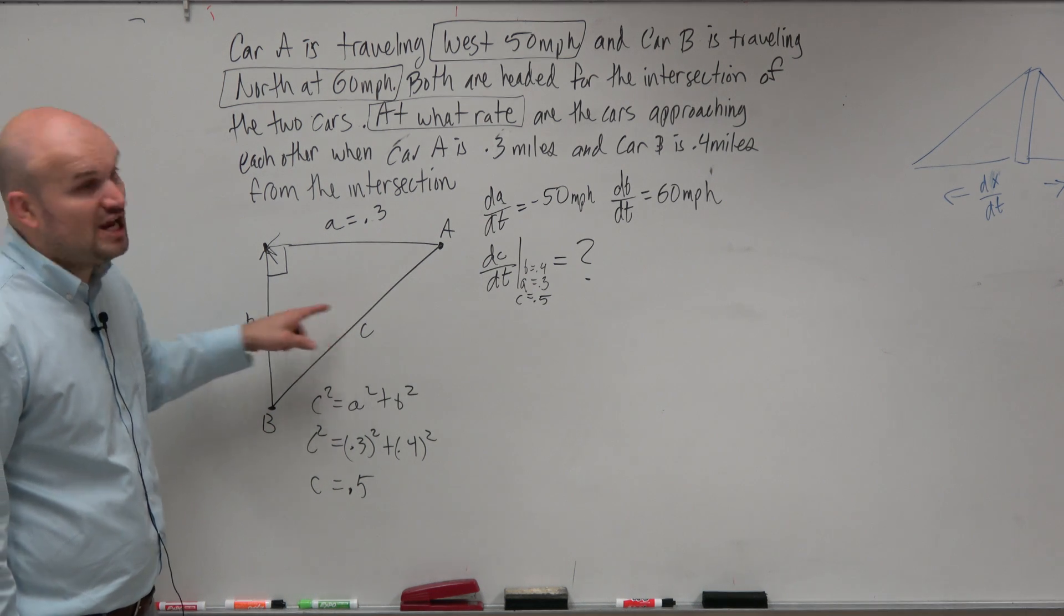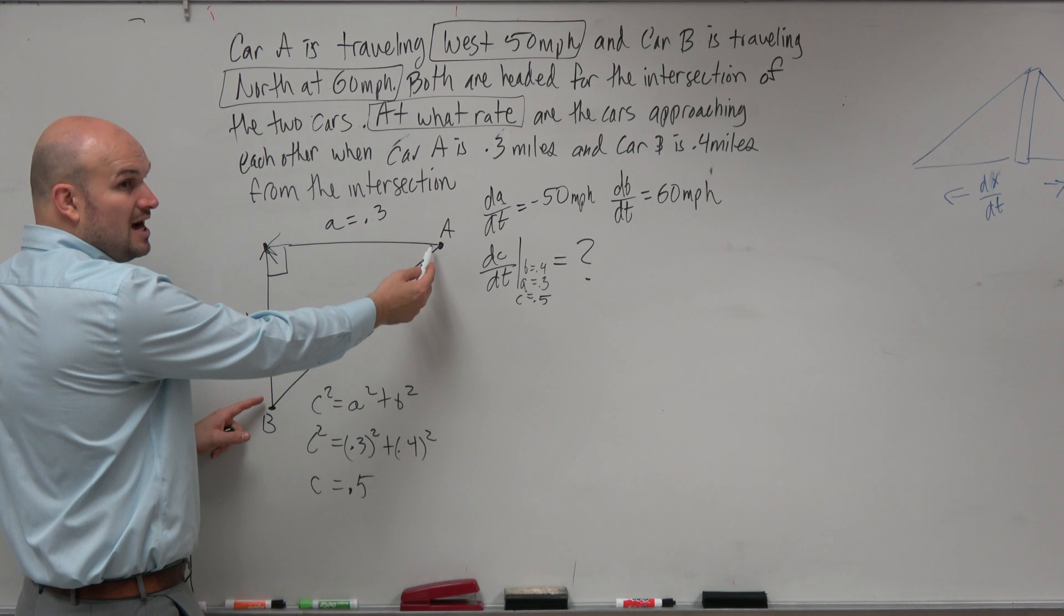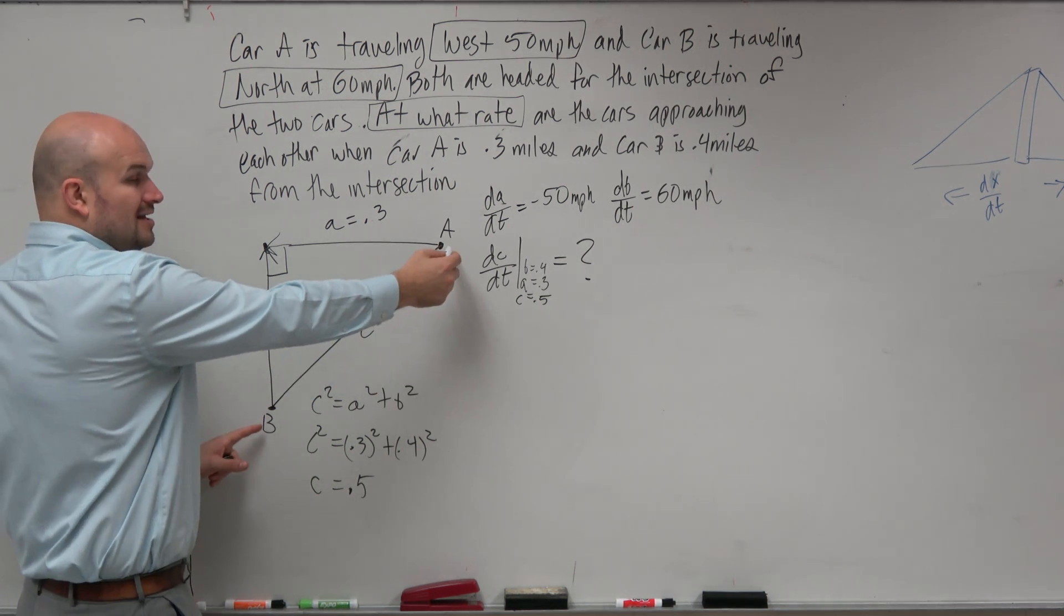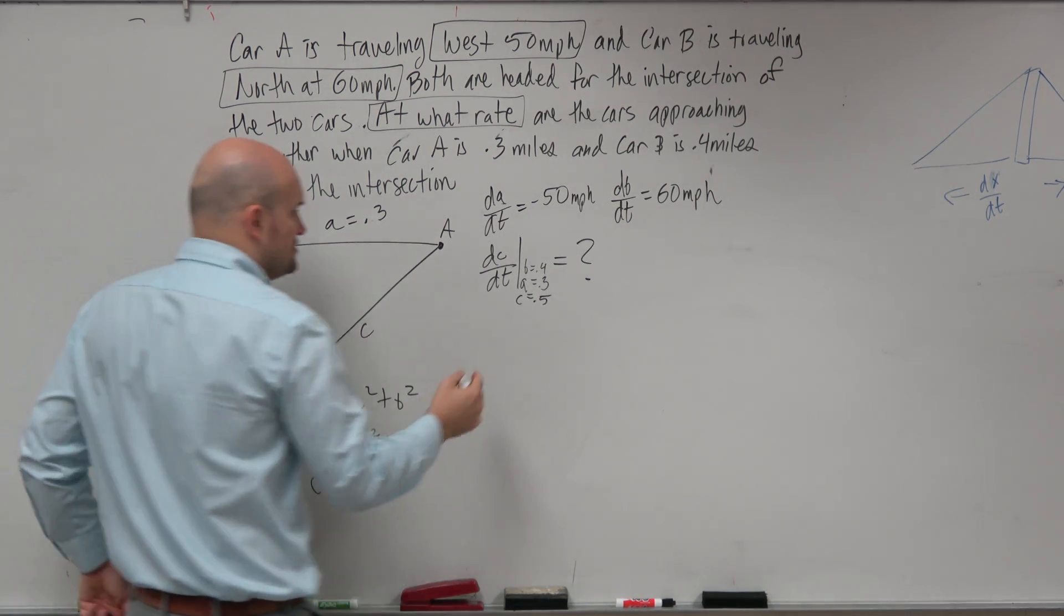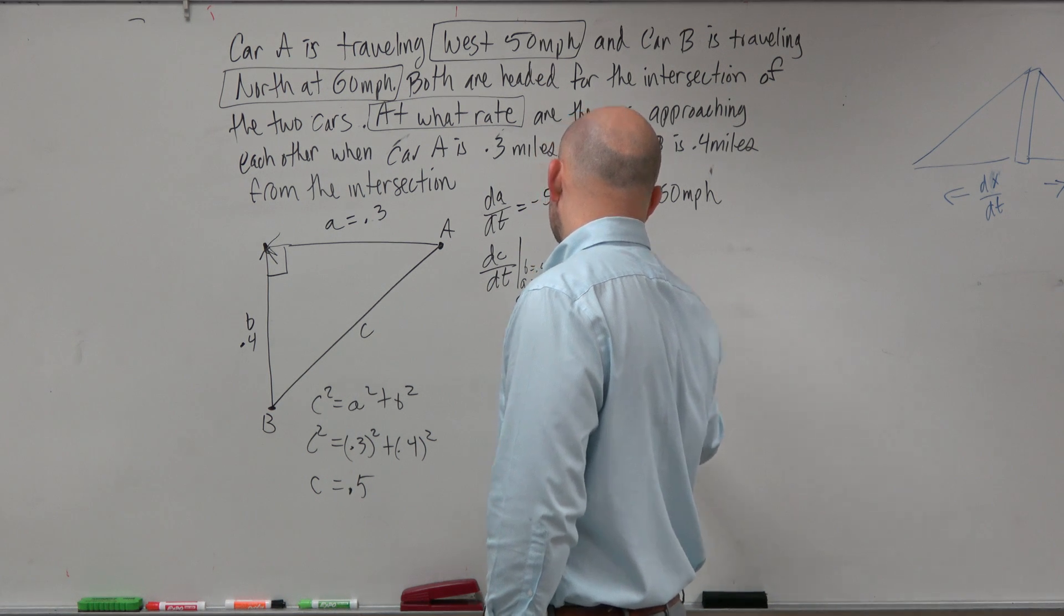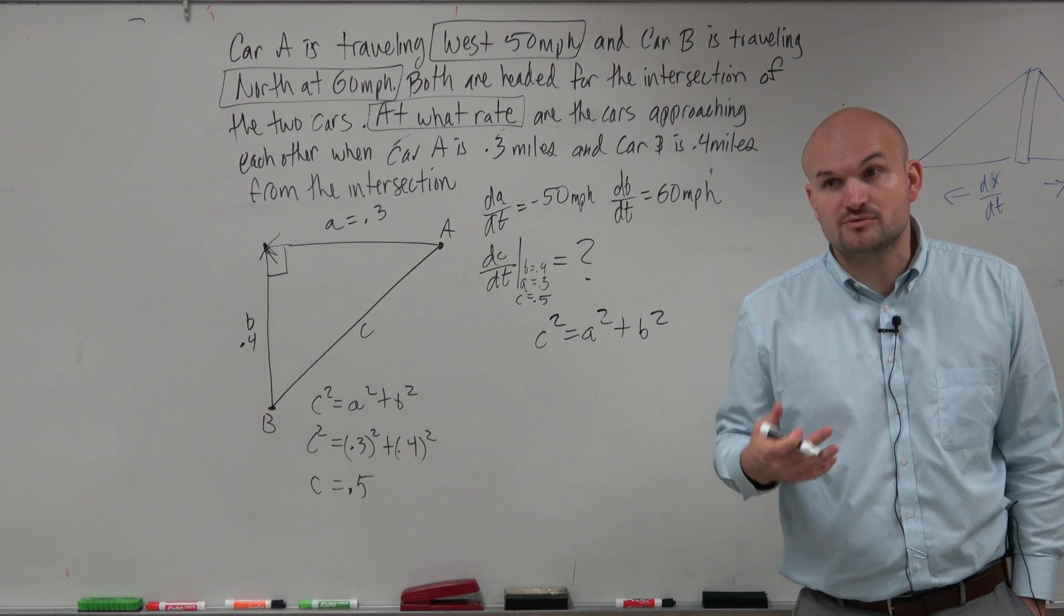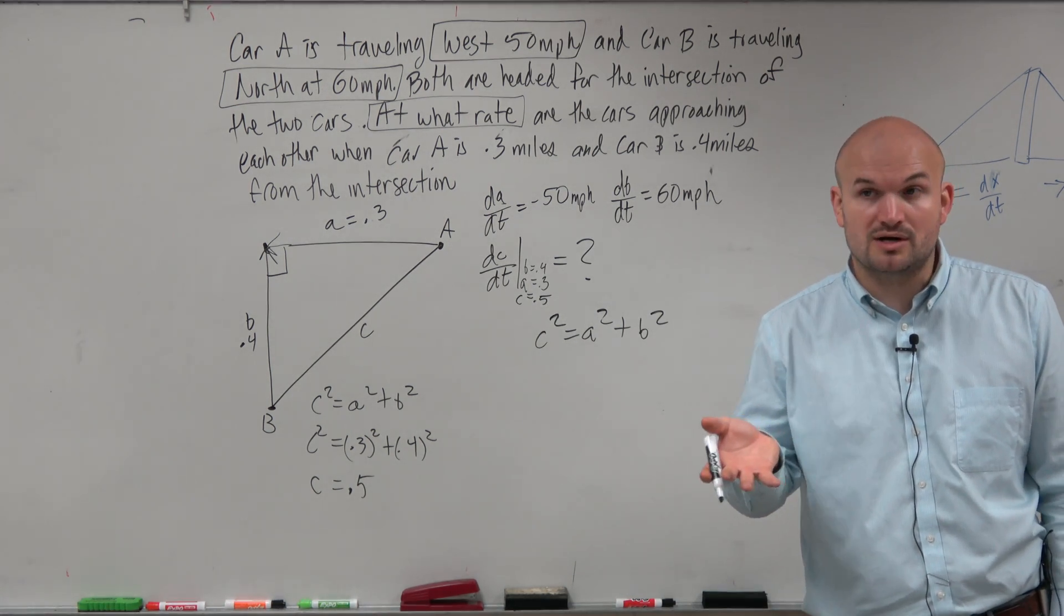Because C is changing. All of these, these cars, it's not like a ladder problem where this is falling and these two are changing. Now they're approaching each other. All three values are changing. So let's write a relationship then. We know C squared equals A squared plus B squared. Everybody agree that's the relationship of all three values of the two cars.